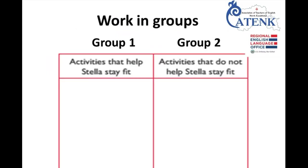Now please divide into two groups. Group number one should scan the text again and find the activities that help Stella keep fit. Group number two should also scan the text and find out what Stella does that does not help keep fit. Then write your answers on the chart below.